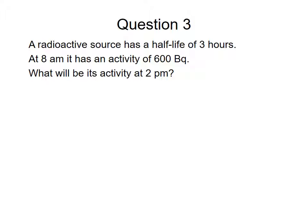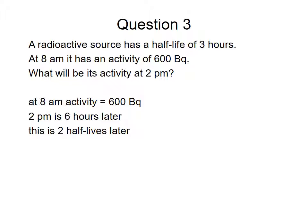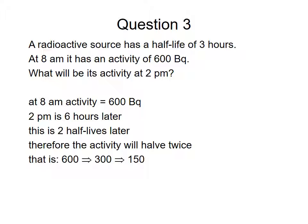Looking at the next question. A radioactive source has a half-life of three hours. At 8 a.m., its activity is 600. What's its activity at 2 p.m.? So the activity at 8 a.m. is 600 Becquerels. 2 p.m. is six hours later. This is two half-lives later. Therefore, the activity will be half twice or 150 Becquerels.